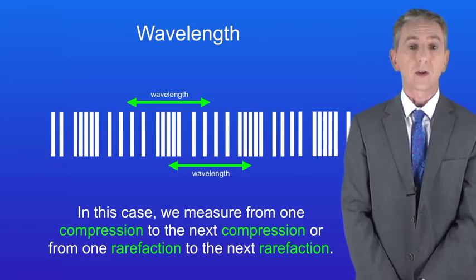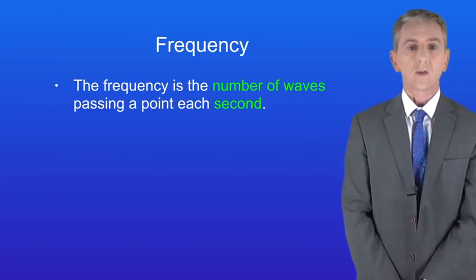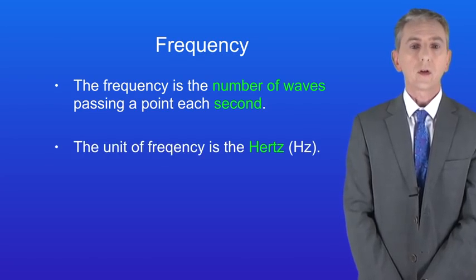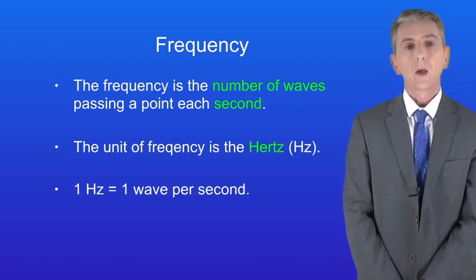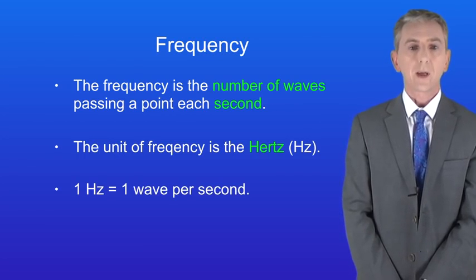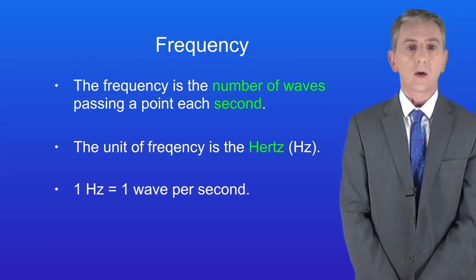Okay the next property of waves is the frequency. The frequency is the number of waves passing a point each second and the unit of frequency is the Hertz. One Hertz equals one wave per second. Now in the exam you could be asked to work out the frequency of a wave from a diagram. So let's look at that now.